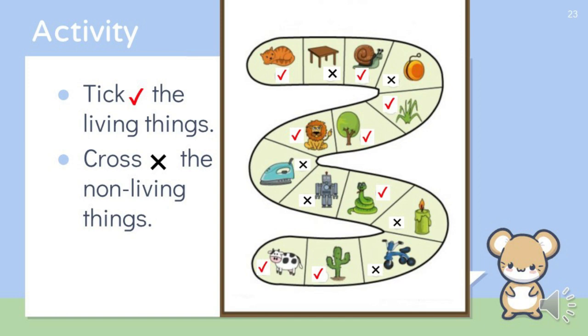Then we have a picture of a toy robot. It is a non-living thing. Then there is a picture of an iron. It is also a non-living thing, so we are going to cross it out. Then we have a picture of a lion. Lion is a living thing, so we are going to tick it. Then there is a picture of a tree. Tree is a living thing. Then there is a picture of grass. Grass is also a living thing.